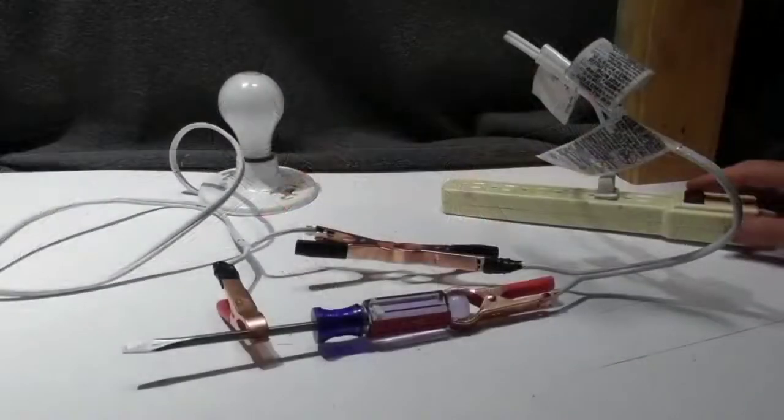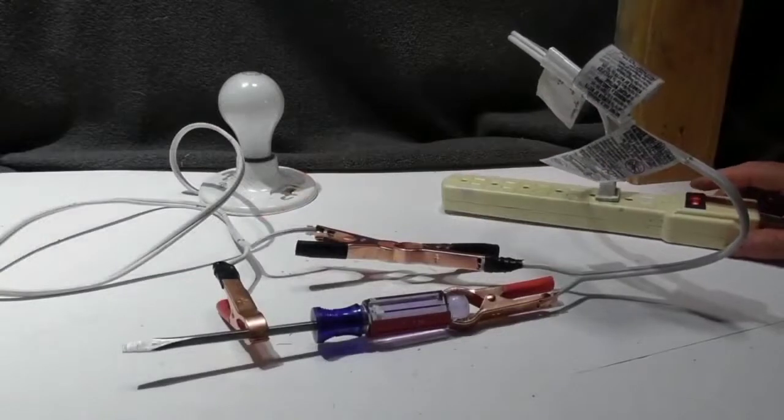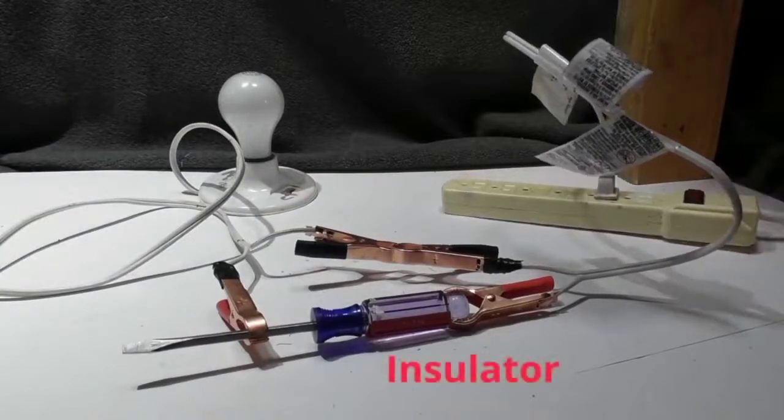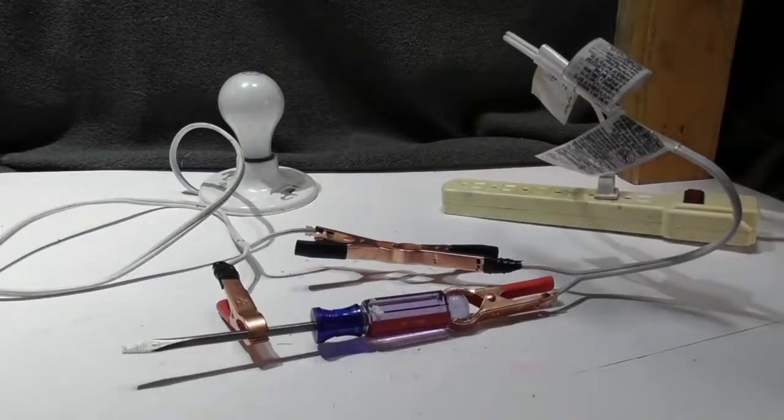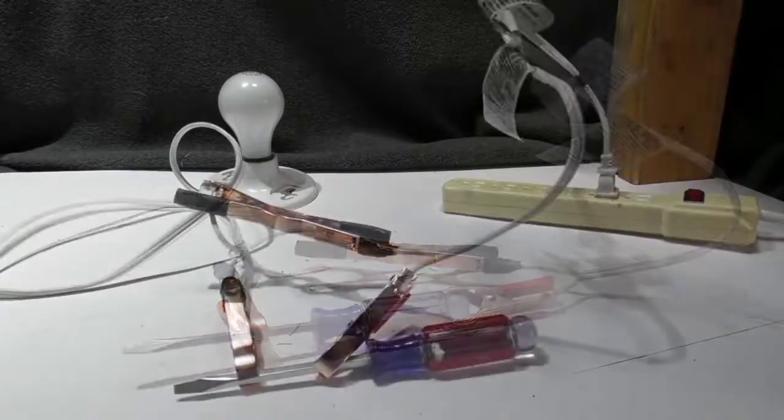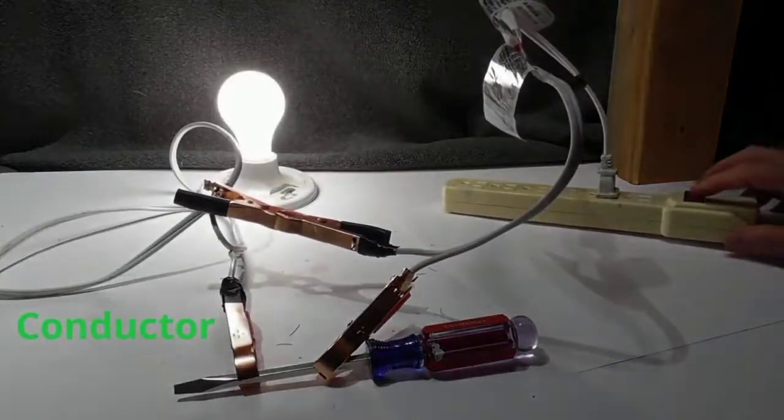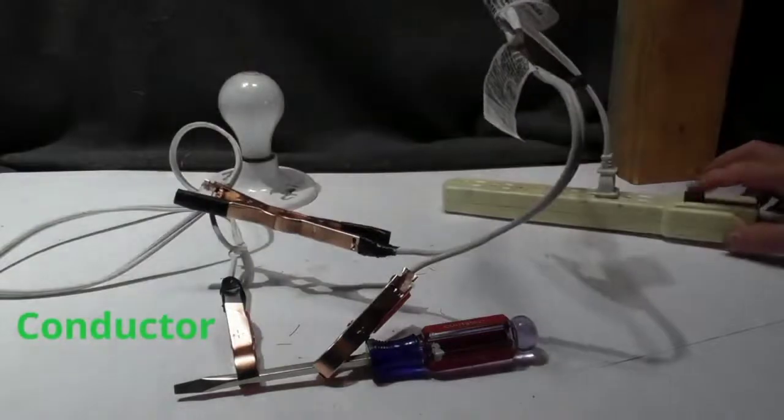Next, let's try this screwdriver. The reason why I use this, I have plastic on one end, metal on the other. I flip the switch. Nothing happens. But now, if I move it to where it is touching metal only, it is now a conductor. So the plastic helps insulate it.